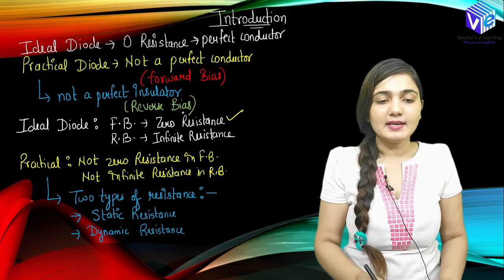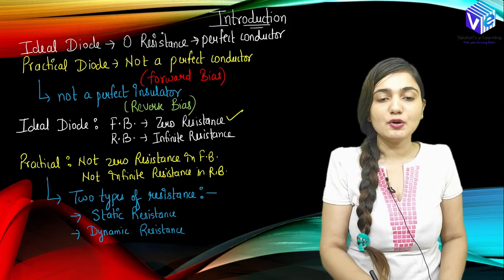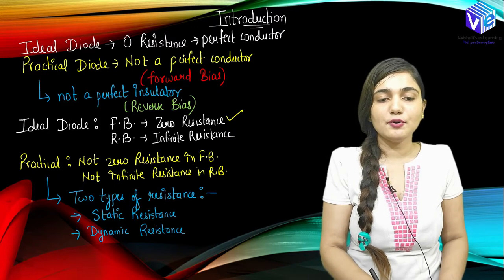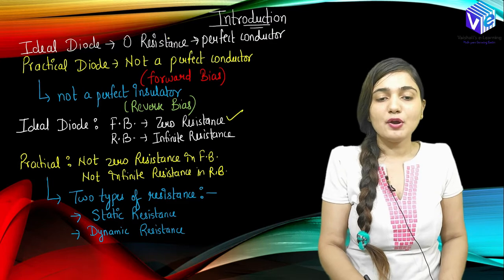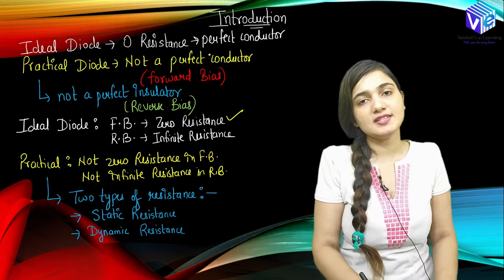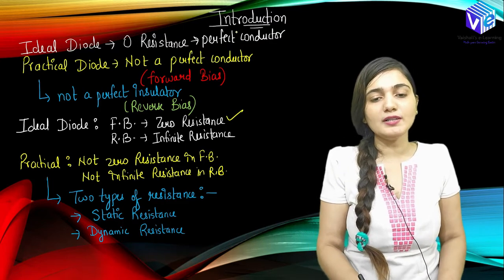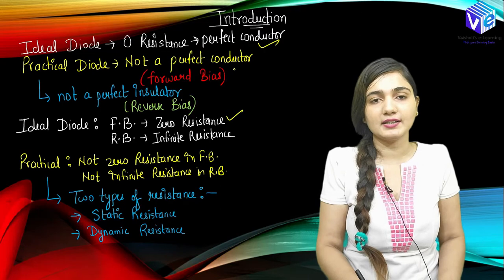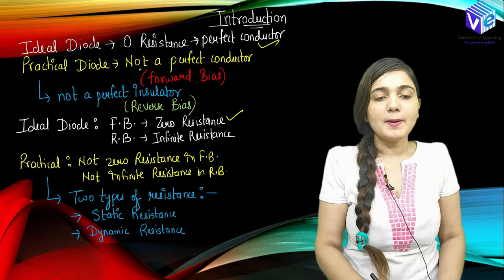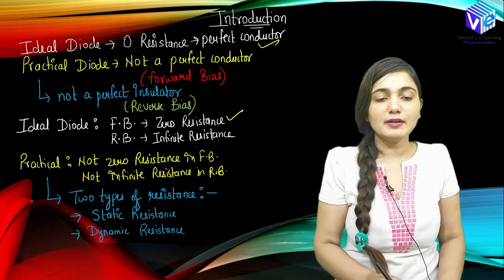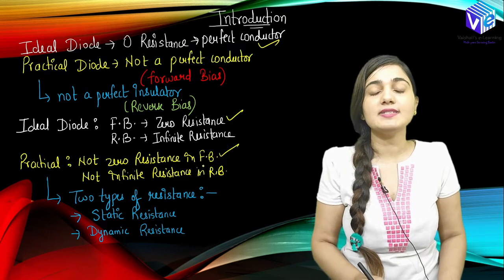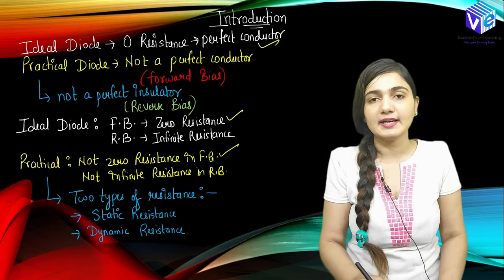So ideally we will not be having zero resistance. In the practical diode it is not called a perfect conductor, because if I have zero resistance only then do I call the substance a perfect conductor. Practical diode is not a perfect conductor, so we will be having non-zero resistance in the forward bias in the practical diode.